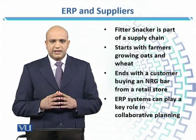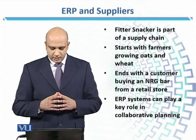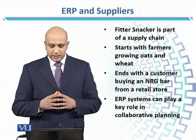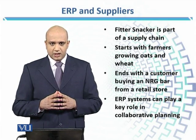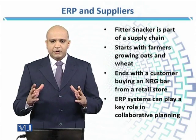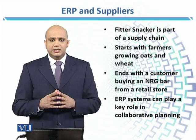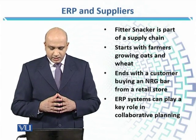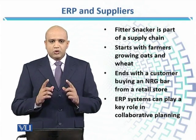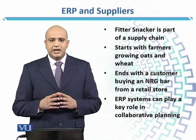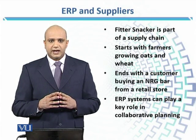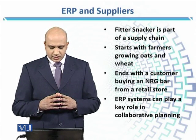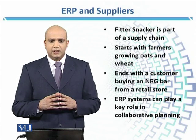In the case of the Fitter Snacker case study, it is a part of a supply chain. They produce different types of snack bars, and note that this whole process will start with farmers growing oats and wheat.